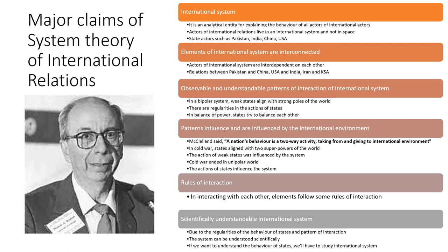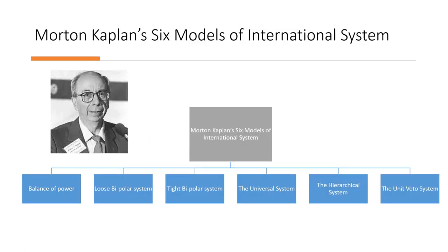Morton Kaplan then came up with six models of the international system. He said that there is an international system and we can study it. He presented six models: the balance of power system, the loose bipolar system, the tight bipolar system, the universal system, the hierarchical system, and the unit veto system. Let's study these systems in detail.